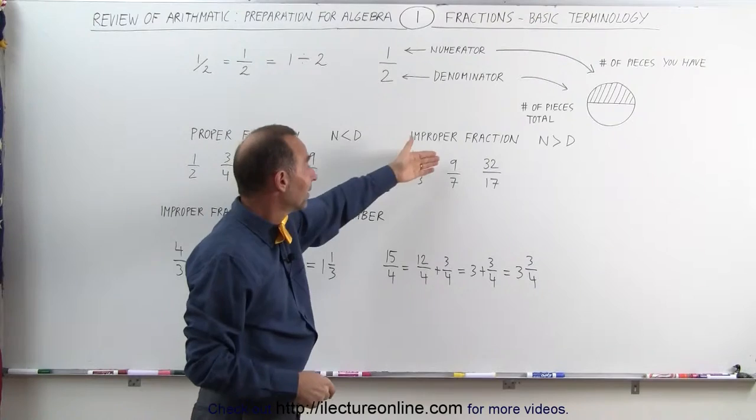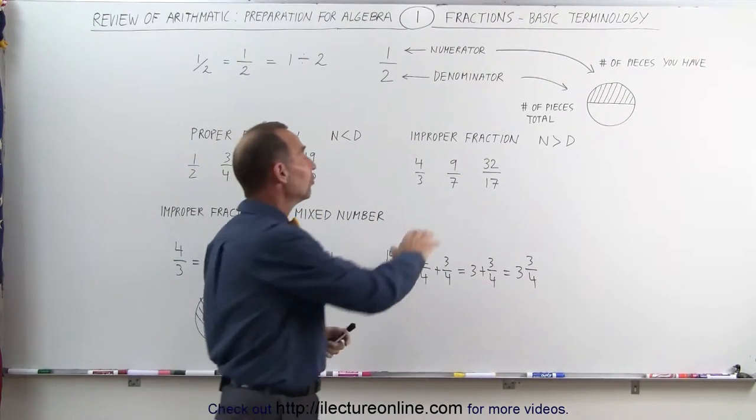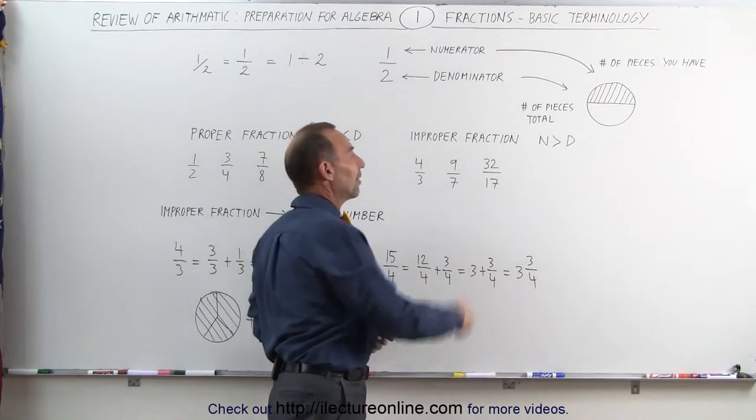Or said 4 thirds, 9 sevenths, 32 seventeenths. All these numbers, all these fractions, are bigger than 1. They're called improper fractions.